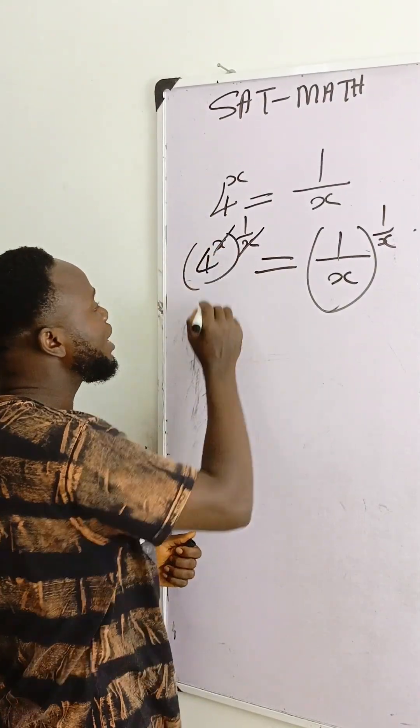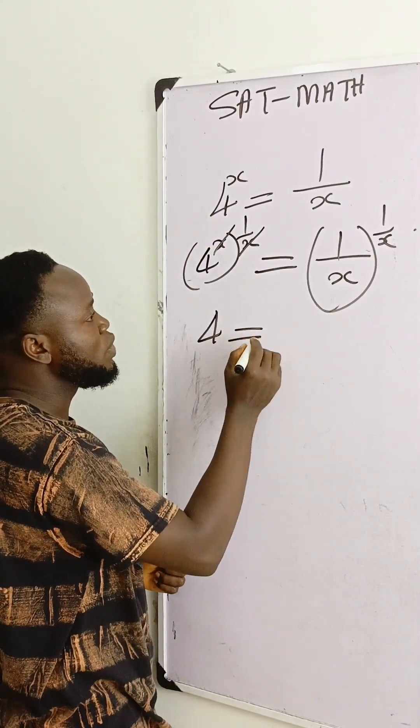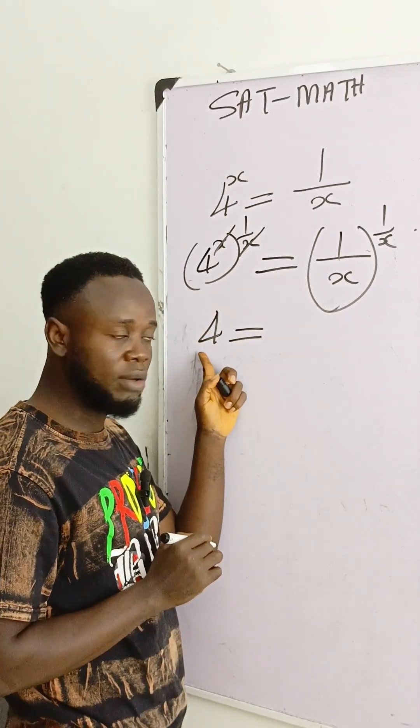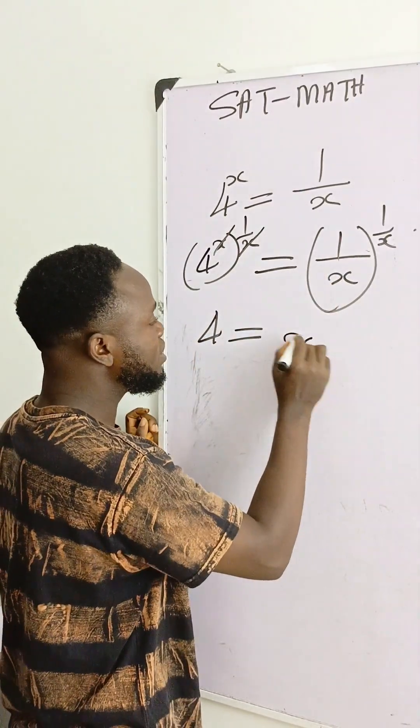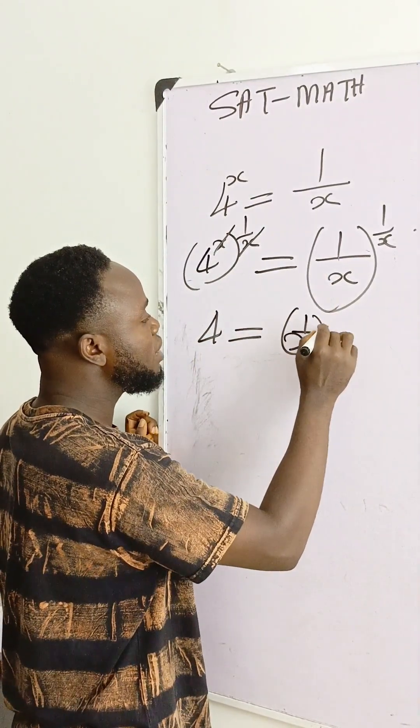At this point, you see that x can divide x, the remaining here is equal to 4. So we have only 4 here now, and we have (1/x)^(1/x).